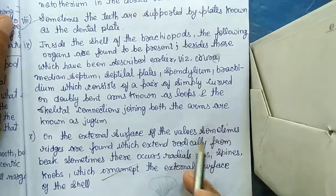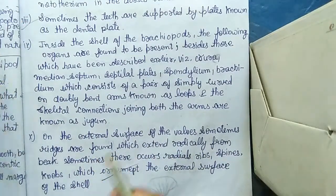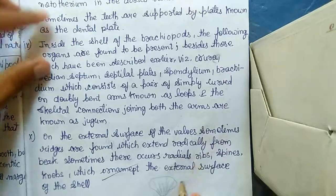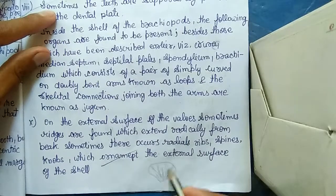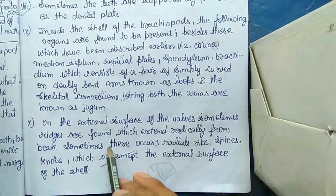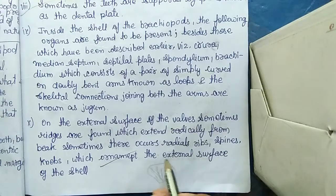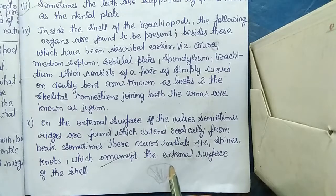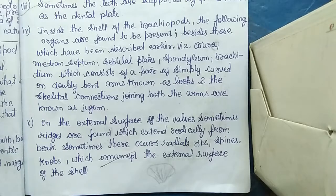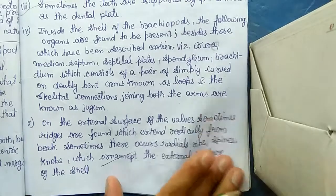On the external surface of the valve, ridges are sometimes formed that extend radially from the beak. Sometimes there also occur radial ribs, spines, and knobs which ornament the external surface of the shell — just as jewelry decorates humans, these are called ornaments of the shell.